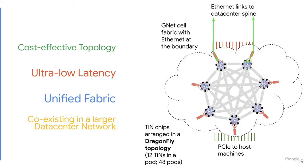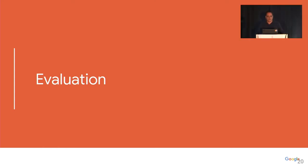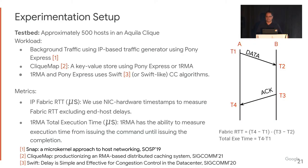We evaluate Aquila using 500 machines in an Aquila clique with two kinds of traffic: background IP traffic using a synthetic traffic generator with Pony Express, and ClickMap, which is a production key-value store that uses RMA. ClickMap uses both 1RMA and Pony Express, with Swift or Swift-like algorithms as congestion control. The metrics we use are fabric RTT as measured by hardware timestamps, and 1RMA total execution latency as exported by hardware — noting that 1RMA total execution latency is an overestimation of fabric buffering because it includes PCIe response processing.